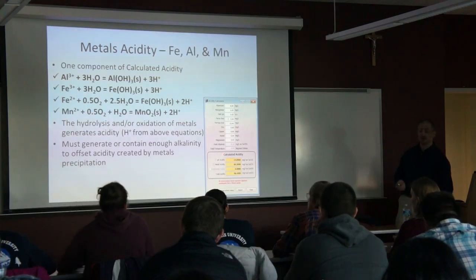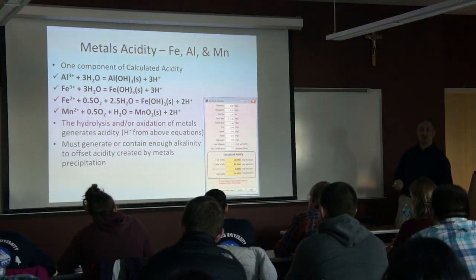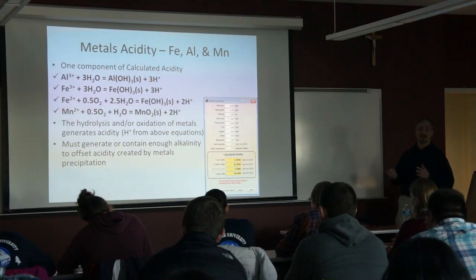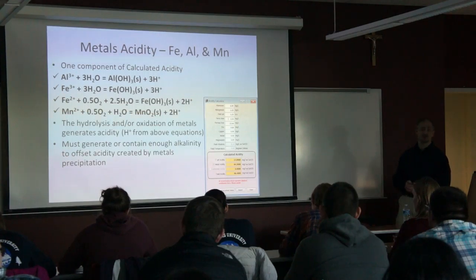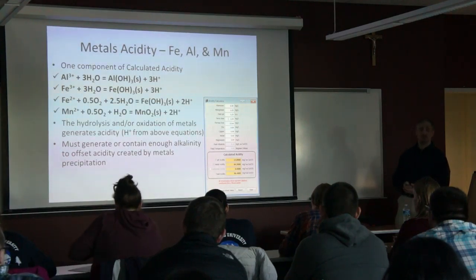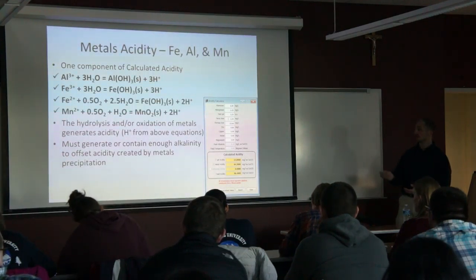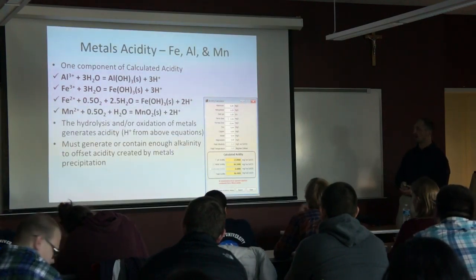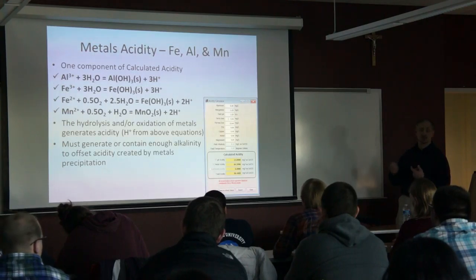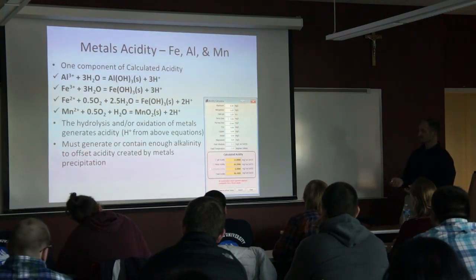The bottom line is you must generate or contain enough alkalinity in the water through treatment to offset how much acidity is already in it and how much is created by the metals once they precipitate. There's software — AMBtreat — that you can use to figure this out up front before you even design your treatment system. The agency I work for actually created this software and it's free.